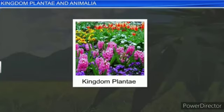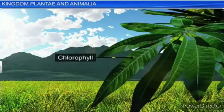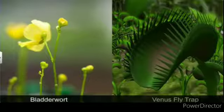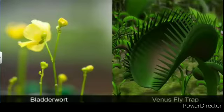Kingdom Plantae includes all eukaryotic, chlorophyll-containing organisms, commonly called plants. They are autotrophic and contain chlorophyll. However, a few members are particularly heterotrophic — they depend on other organisms for food. We will discuss those, including insectivorous plants, where nitrogen deficiency is present.